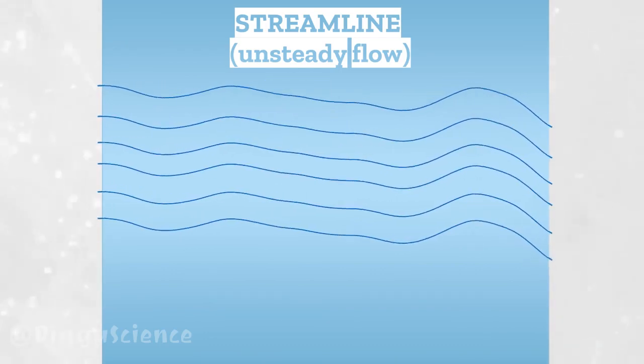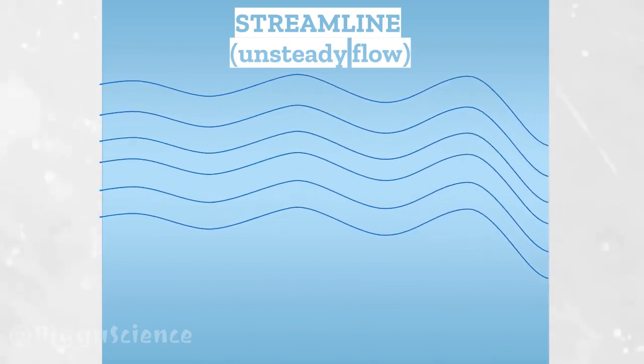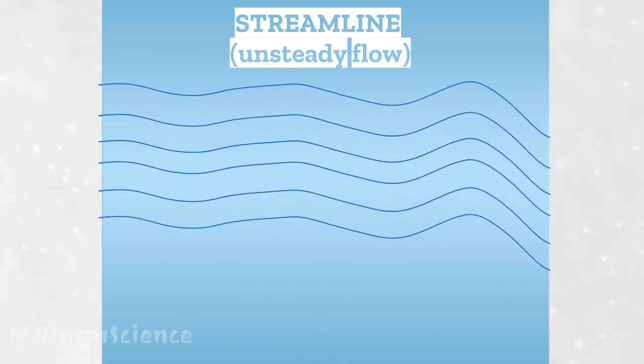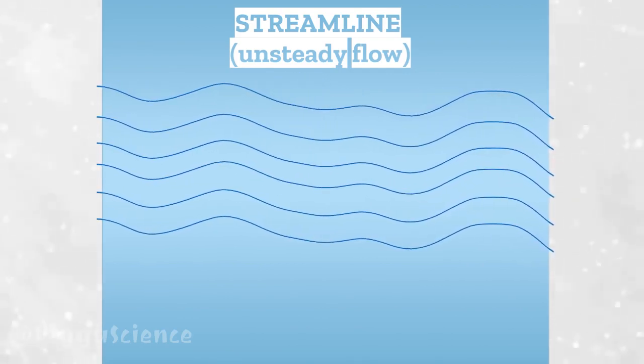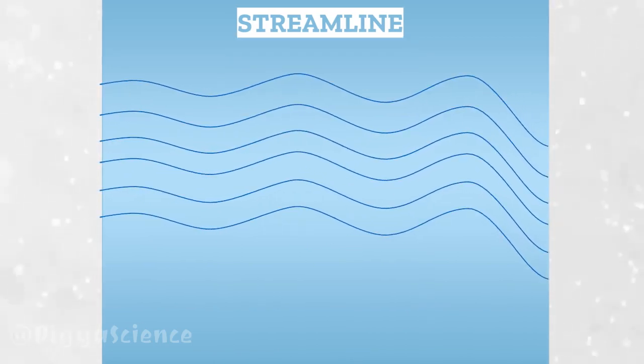In general, in turbulent flows the shape of the Streamline always changes over time. Meanwhile, in steady flow, the shape of the Streamline is always the same all the time.